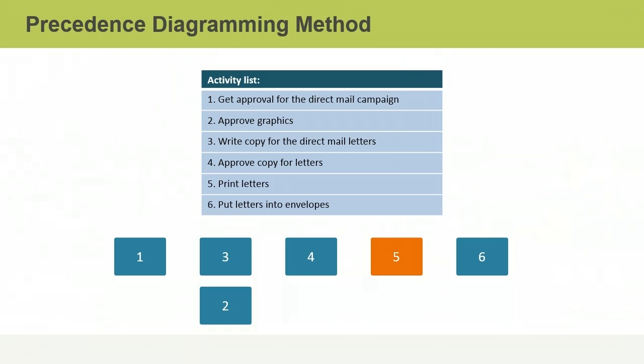Last, you should identify any external dependencies. The fifth activity, printing, will be handled by an external company, so you highlight it in a different color from the other nodes.